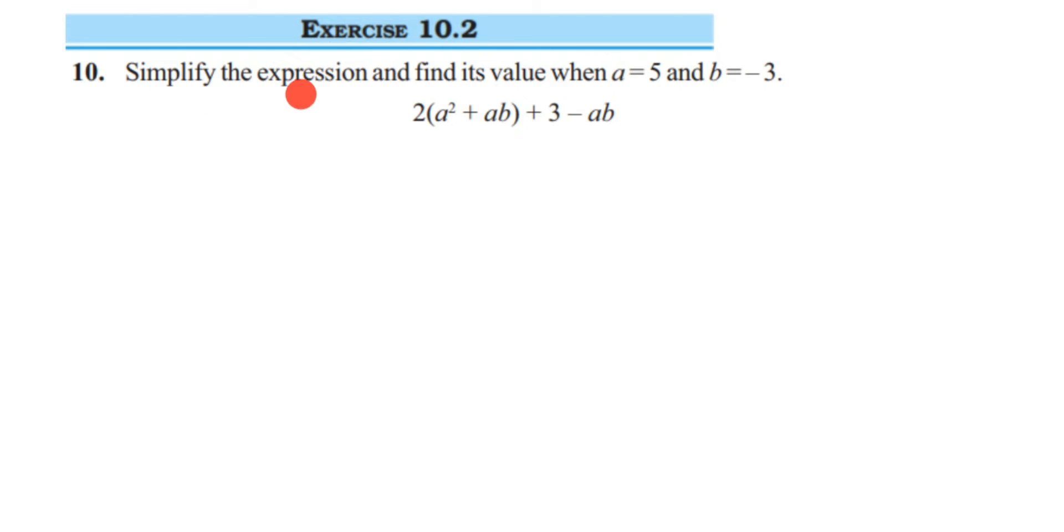The question is, simplify the expression and find its value when a is equal to 5 and b is equal to minus 3. They have given a value is 5 and b is equal to minus 3, and they have also given the expression. We have to first simplify it and get the value of the given expression.